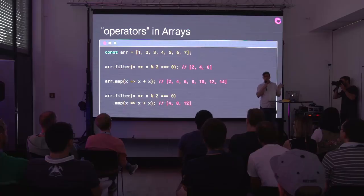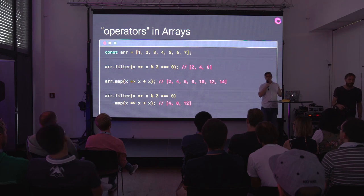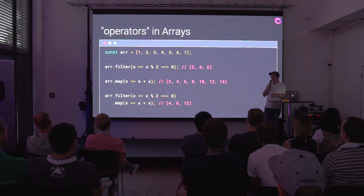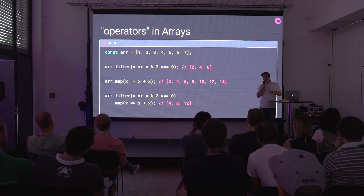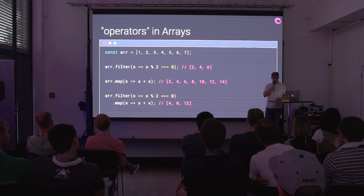We have operators that people use all the time in things like array. The word 'operator' comes from the more mathematical sense of dealing with sets of things. An array is a set of things. An array can be queried with filter to make a smaller array, or mapped into a new array of things. You can chain them together and say filter and then map, and at each step it creates a new array.